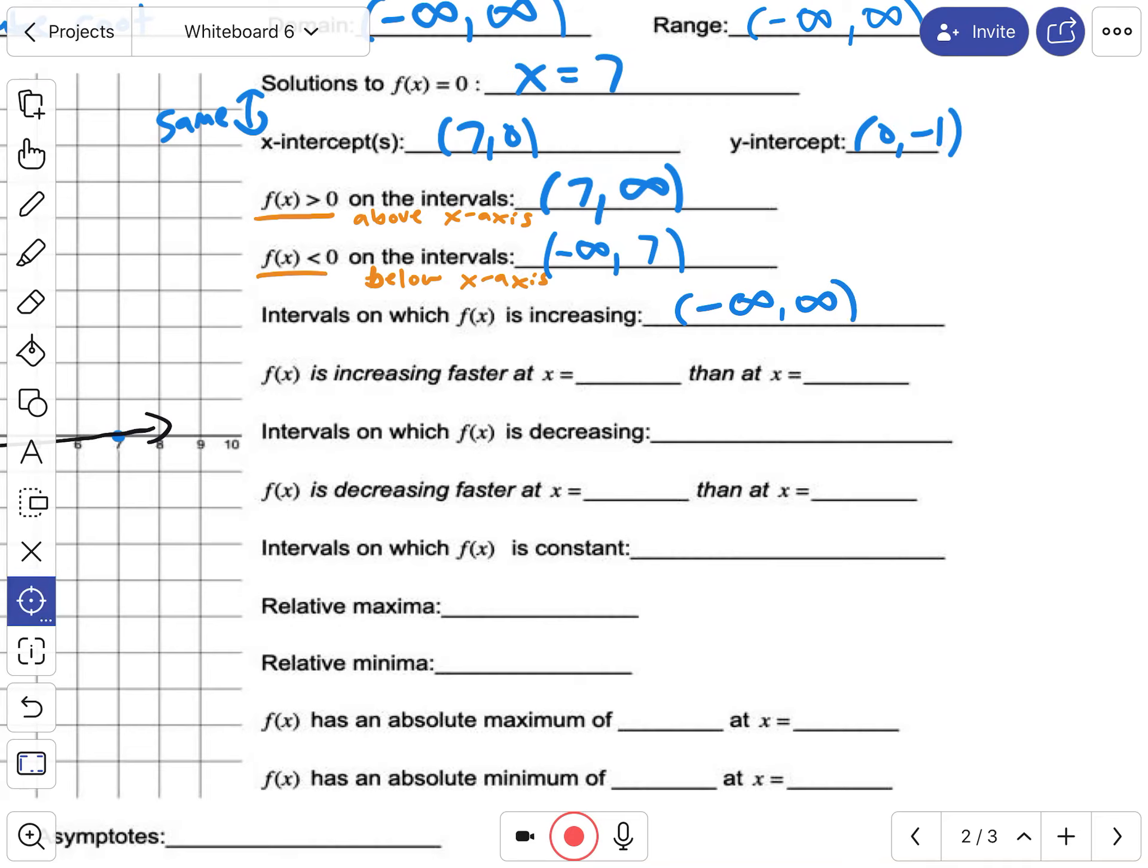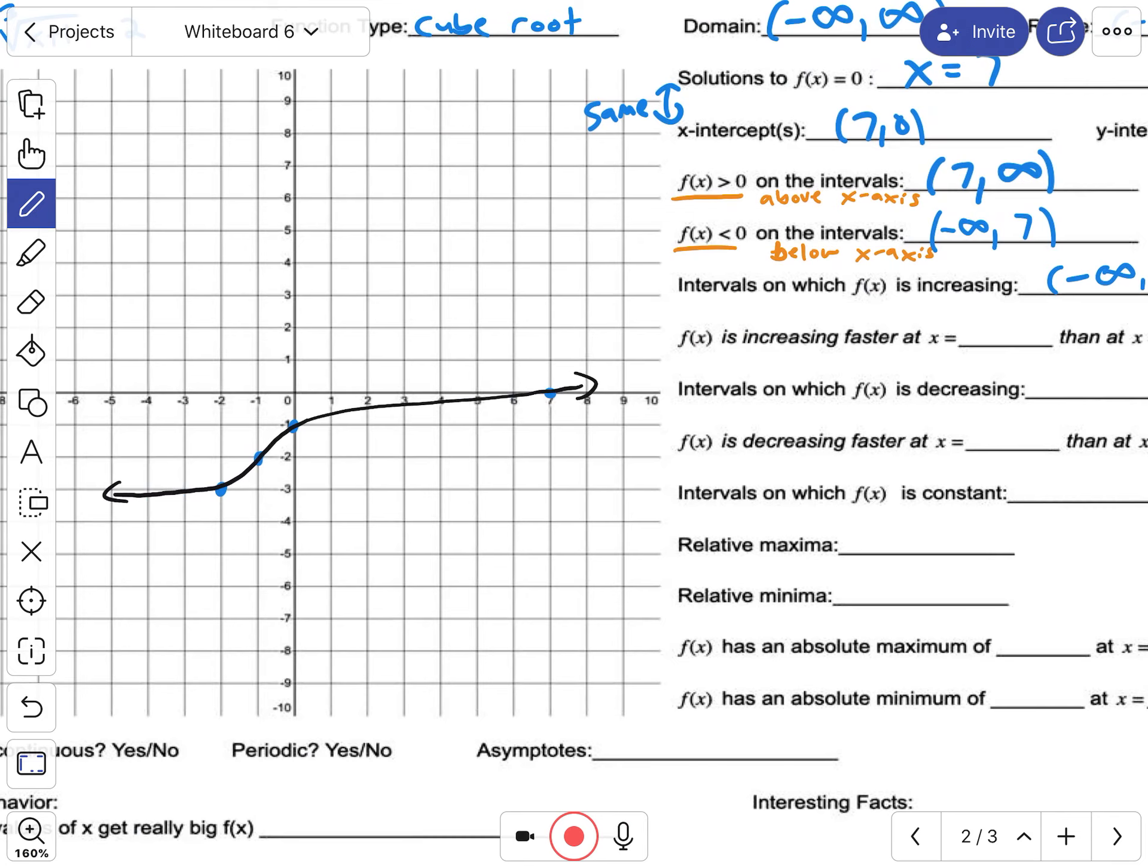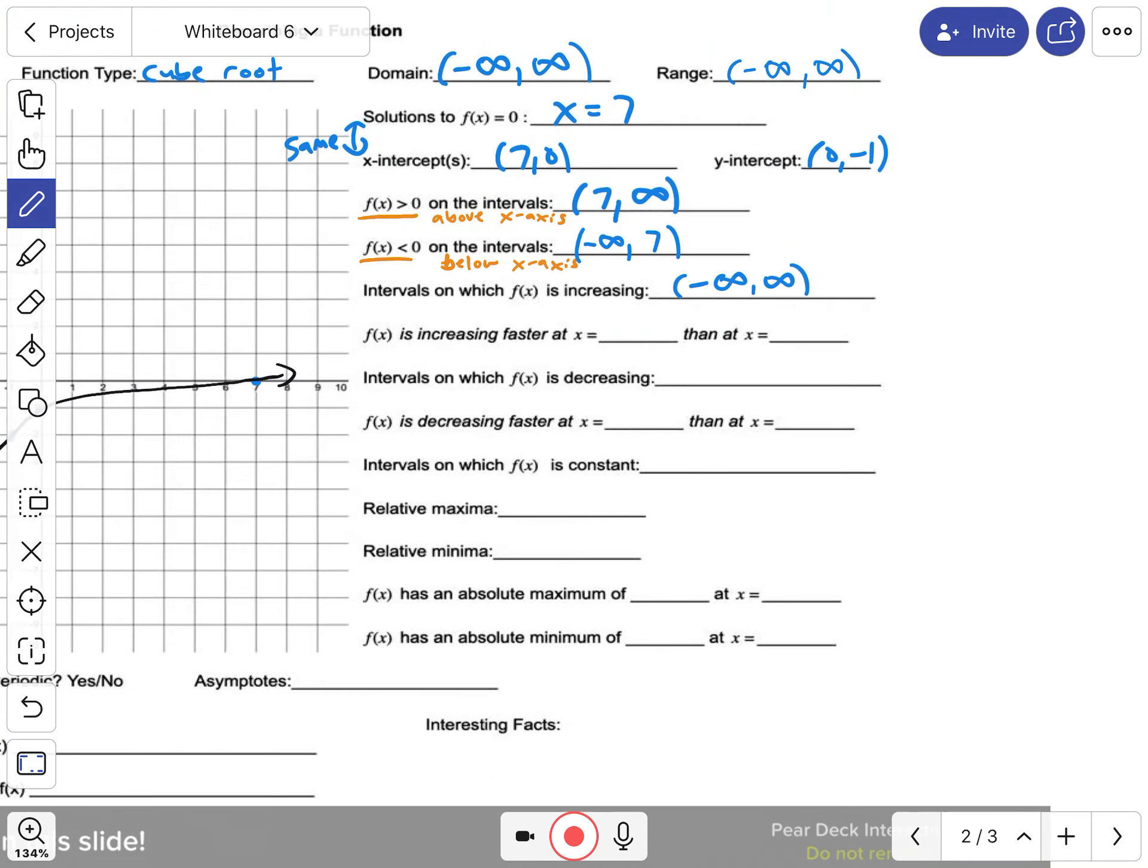Is it increasing faster at a certain place than another? I think so. When you look at this, it's steeper here versus here—it's more flat, right? So maybe right here when x is negative 1, it's going up faster than when x is 7. It's not going up that fast, so I'll put those.